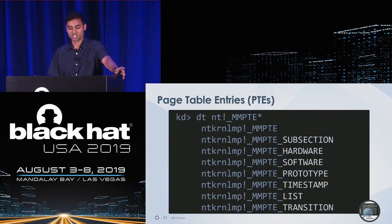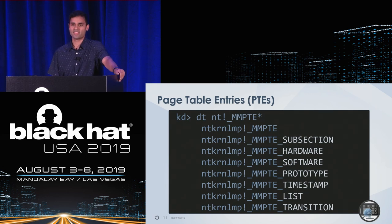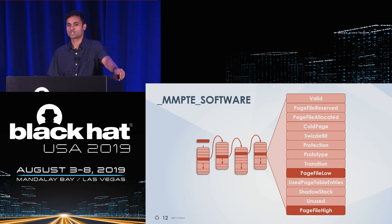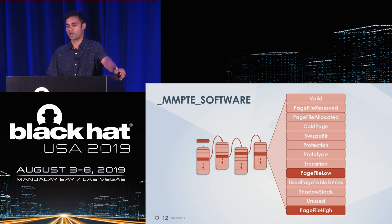There are all sorts of different page table entries. A subsection PTE corresponds to a memory-mapped file. A hardware PTE is for memory in physical RAM. And then there's a software PTE — the one we're interested in today. The software PTE signifies that your data has been outpaged. When we arrive at a software PTE, we're interested in two fields: page file low, an index from 0 to 15, and page file high, the offset to jump to within that page file.